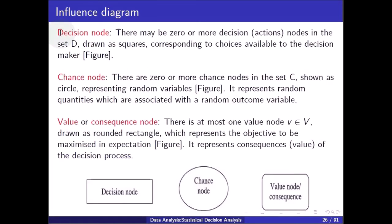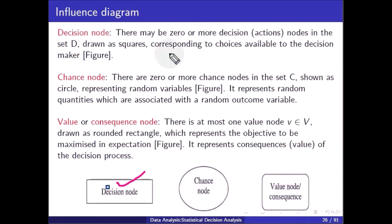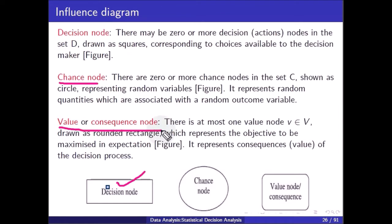There may be zero or more decision nodes in set D, drawn as a square, corresponding to choices available to the decision maker. There are zero or more chance nodes in set C, shown as a circle, representing random variables associated with a random outcome. There is at most one value node V, drawn as a rounded rectangle, which represents the objective to be maximized in expectations.